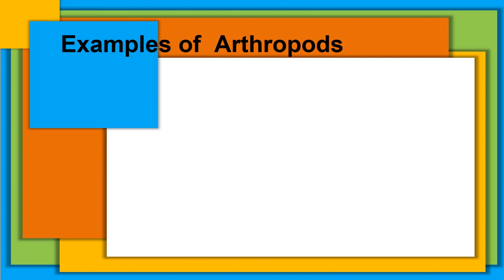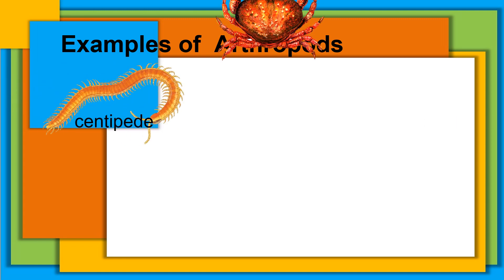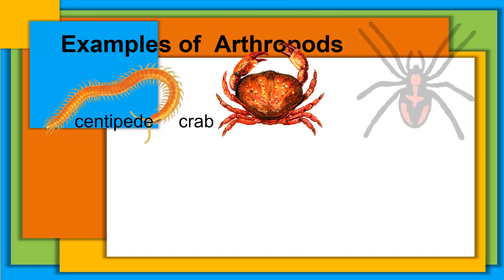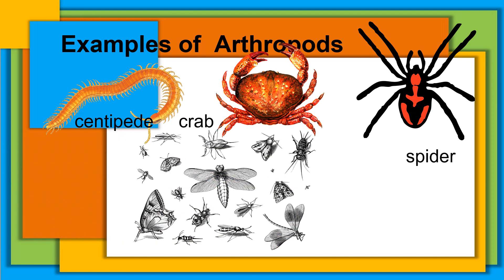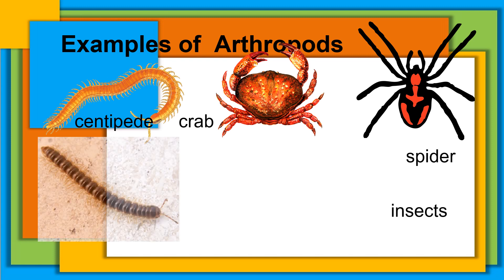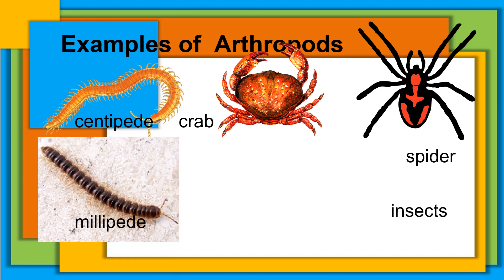Examples of arthropods are centipede, crab, spider, insects, and millipede.